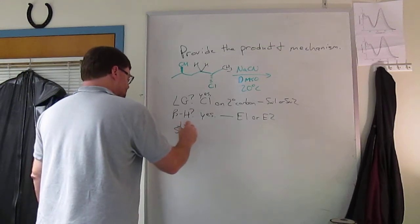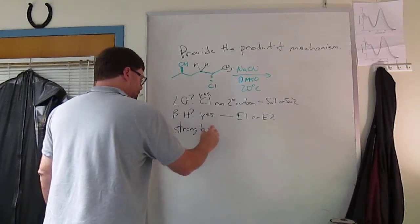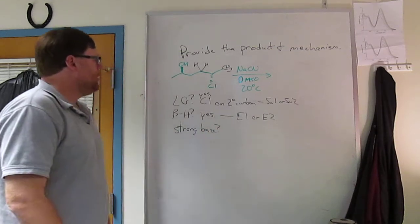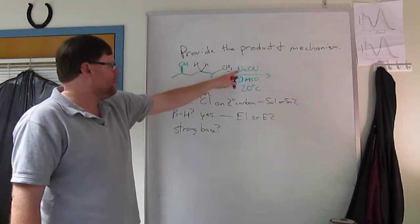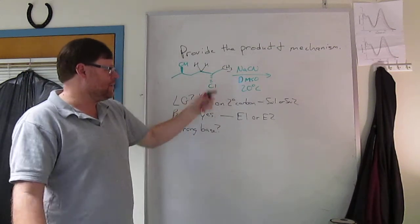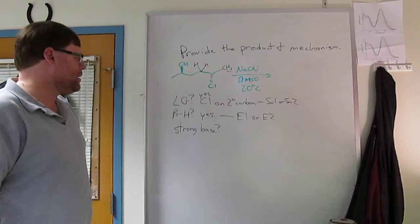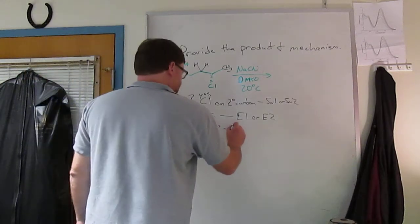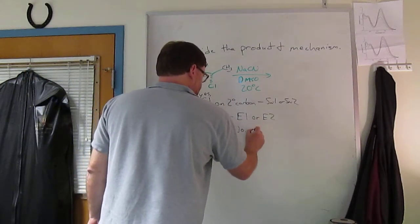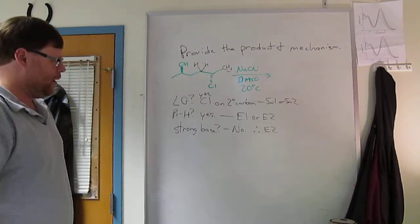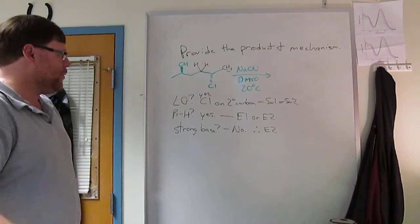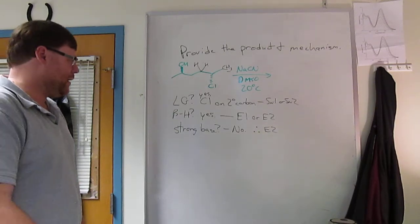So do you have a strong base? And the answer is no, you really don't. Alcohol is not a strong base, it's a weak base. Cyanide is a weak base. DMSO is a polar aprotic solvent. It's a weak base, so you don't. Therefore you can't do E2. E2 requires a strong base. And so you could still do E1, that could be what we end up with. But you can't do E2.